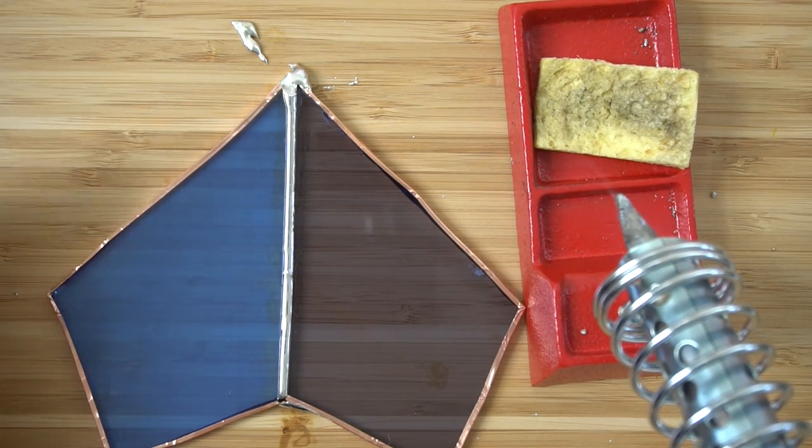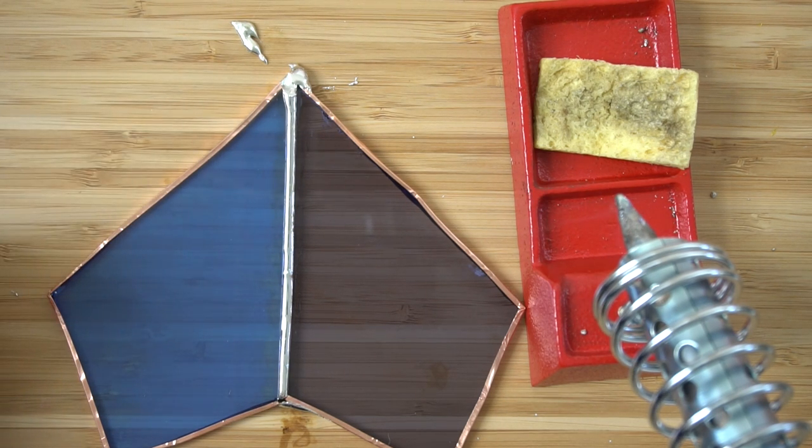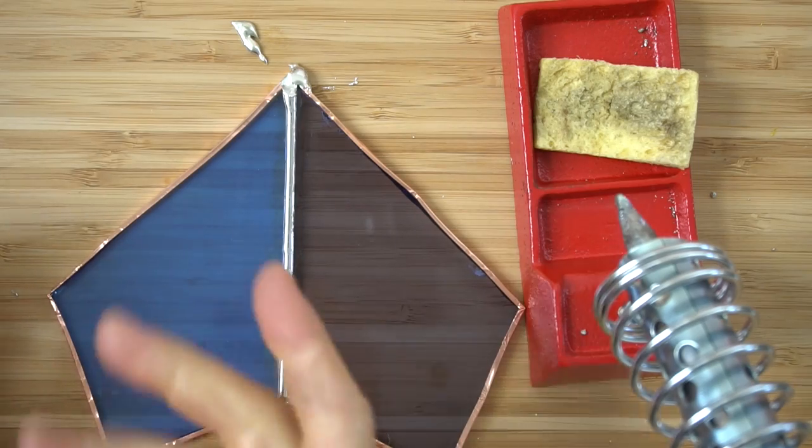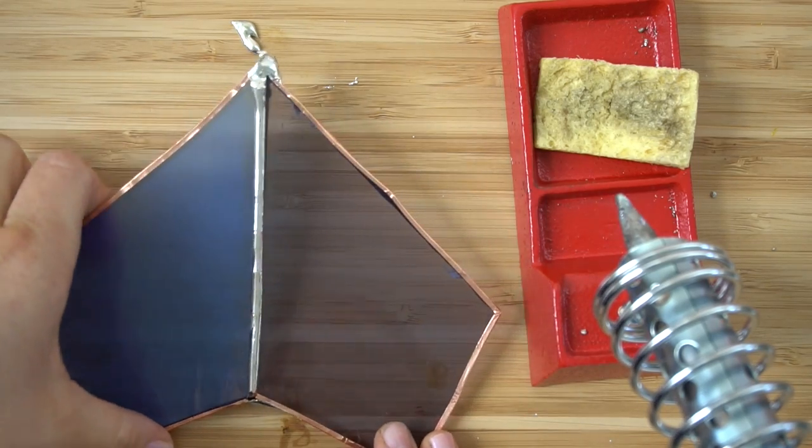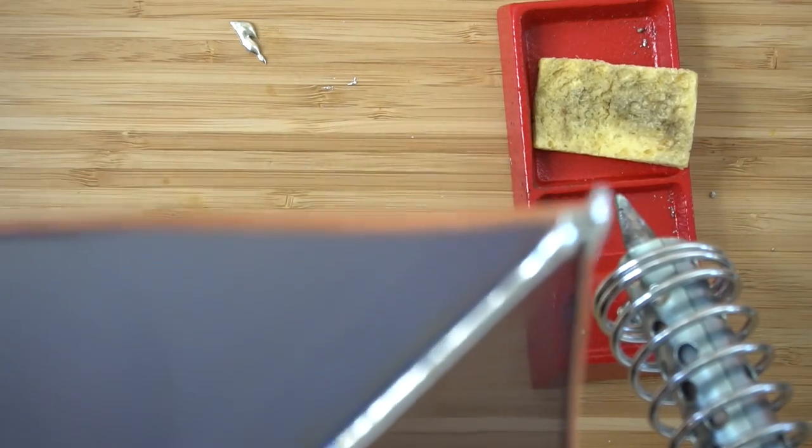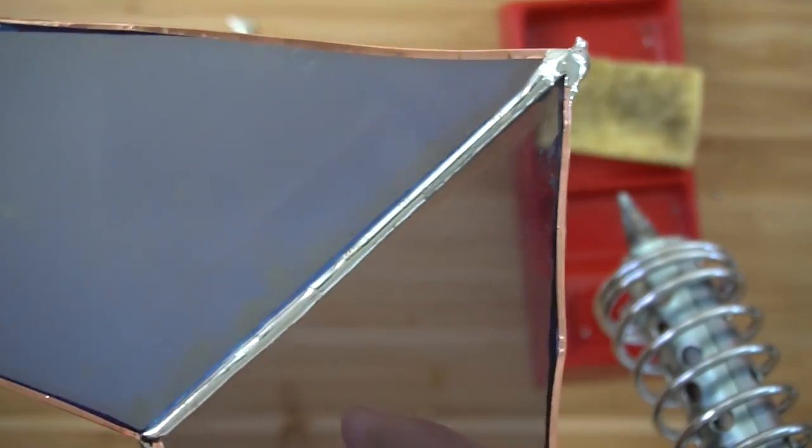If you get a really ugly joint and you have a big clump that you want to remove, then all you do is just grab that soldering iron and you can easily fix those lines. Let me show you close up. It's still a little bit hot.